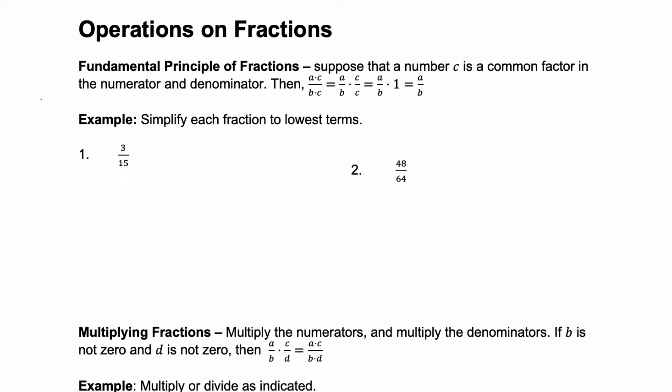This is what allows us to simplify a fraction. If we have a fraction where a times c is the numerator and b times c is the denominator, notice that the numerator and the denominator both have c in common. We can rewrite that where c is a separate fraction, and because you have c over c, that's equivalent to 1, and this reduces to a over b.